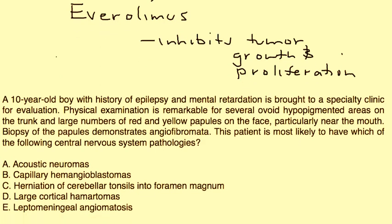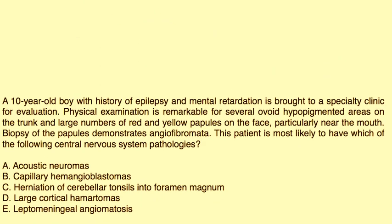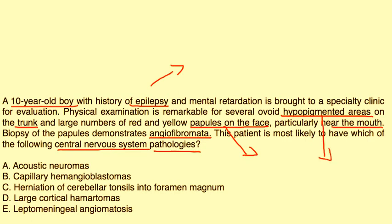Let's take a crack at a few vignettes. A 10-year-old boy with a history of epilepsy and mental retardation is brought to a specialty clinic. Physical exam is marked by several ovoid hypopigmented areas on the trunk and large numbers of red and yellow papules on the face, particularly around the mouth. Biopsy demonstrates angiofibromata. What CNS pathology does this patient most likely have? He's got epilepsy, papules on his face, and hypopigmented areas — this points to tuberous sclerosis. The tumors are called hamartomas, so that's the answer.